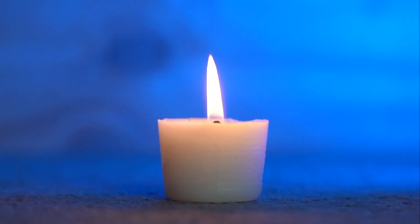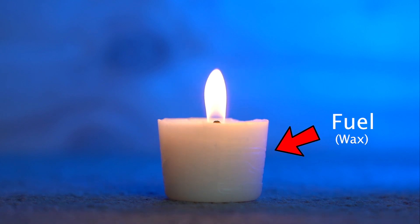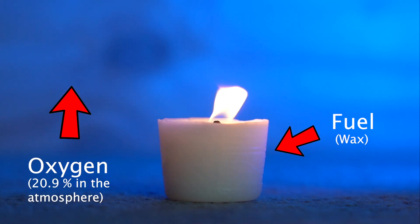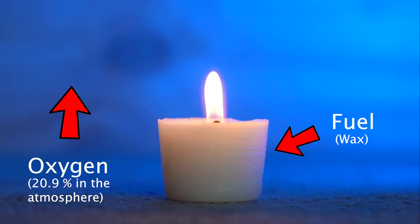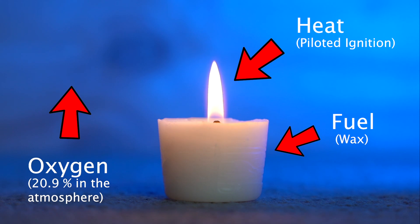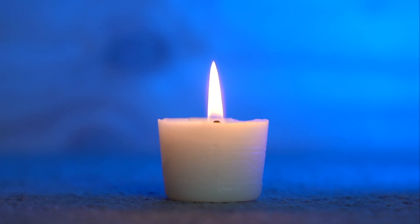Okay so now we have our flame. In this picture we have a candle burning where our fuel is actually the wax itself from the candle. We're getting the oxygen we need for our fire from the air around the candle, and we already have our heat because I lit the candle with a match, so we have a piloted ignition. That's where our heat is coming from, and that is where we get our fire triangle.